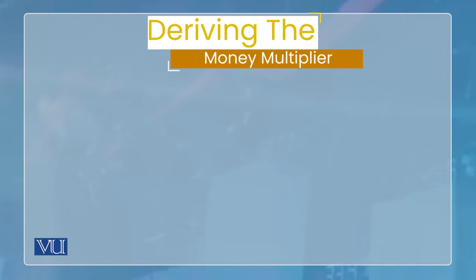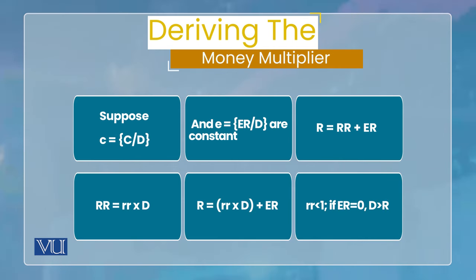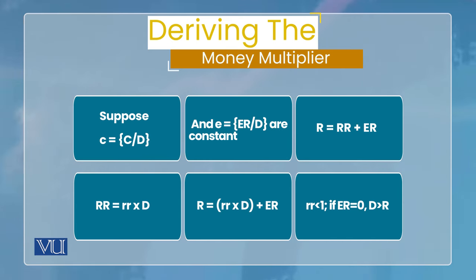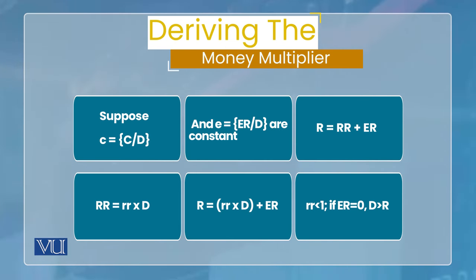اب اگر ہم formula derive کرنا ہے تو derivation کا طریقہ یہ ہے کہ وہی equations جو آپ already پڑھ چکے ہیں انہی کو ہم ایک سے دوسرے میں substitute کر کے derivation کریں گے۔ سب سے پہلے: public کتنی currency hold کرتی ہے اور کتنا deposit — اس کو currency-to-deposit ratio کہتے ہیں، اسے small c سے denote کریں۔ اسی طریقے سے commercial bank کا decision کہ وہ excess reserves کتنے hold کرے — اسے excess reserve-to-deposit ratio کہتے ہیں، اسے small e سے denote کریں۔